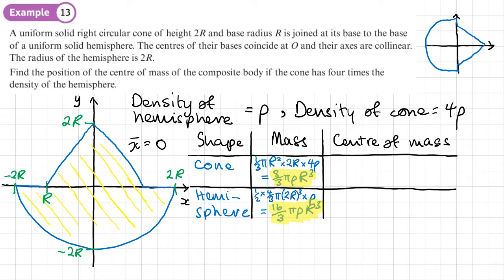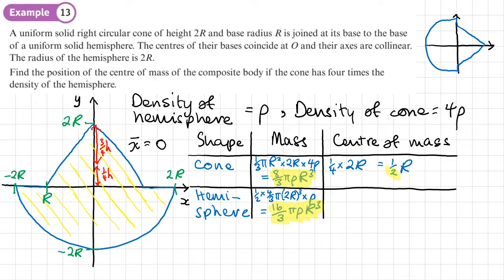Moving on to the centres of mass. For the cone, the formula gives the centre of mass at three-quarters H from the vertex, meaning one-quarter H above the base. So that's one-quarter times 2R, giving the centre of mass for the cone at Y-bar equals one-half R above the origin.